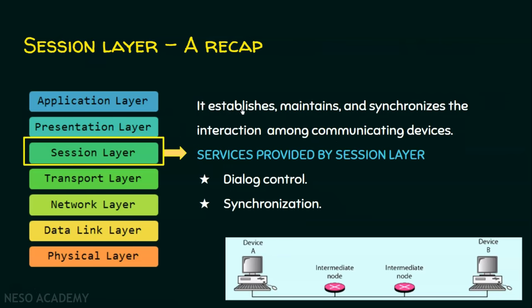The session layer establishes, maintains, and synchronizes the interaction among communicating devices. The services offered by the session layer are dialogue control — meaning the sender and receiver are in some kind of communication relationship — and synchronization, ensuring that the communication is happening perfectly. So far we have seen application layer, presentation layer, and session layer quickly. Now we will move on to the transport layer.